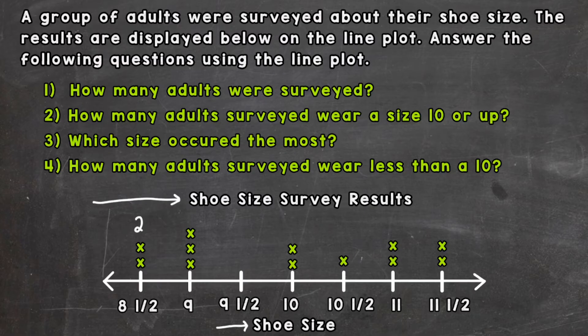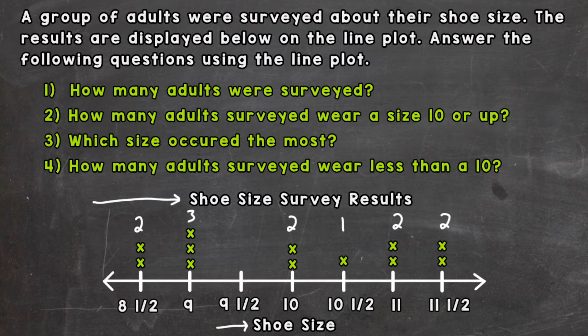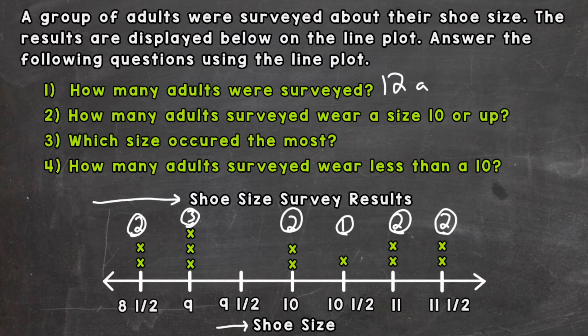For size eight and a half, we have two people. For size nine, we have three. For size ten, we have two. For ten and a half, we have one. For eleven, we have two. And for eleven and a half, we have two. Adding all those up: two, five, seven, eight, ten, twelve. So twelve adults were surveyed.